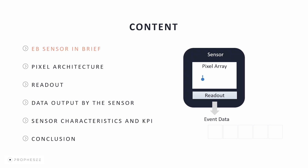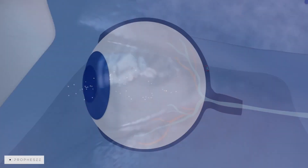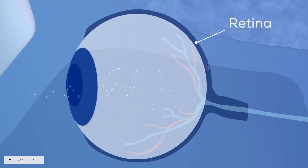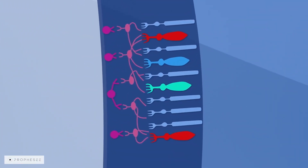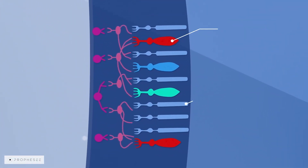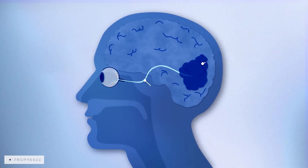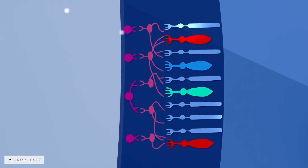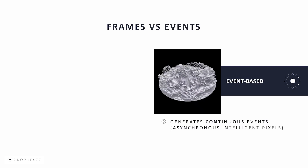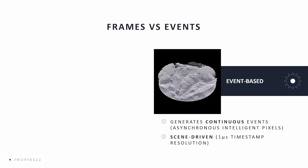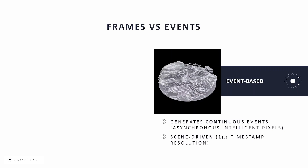Prophecy event sensors are inspired by the function of the human eye. In the human eye, light passes through the cornea and the pupil and is focused by the lens onto the retina, the light-sensitive region at the back of the eye. Special cells called photoreceptors transform the light into electrical signals, which are carried by the optic nerve to the brain. Prophecy have designed pixels that operate independently and asynchronously, reacting only to changes in the scene, similar to photoreceptors in the human retina.